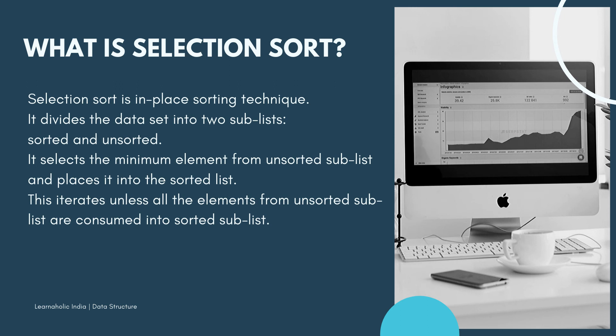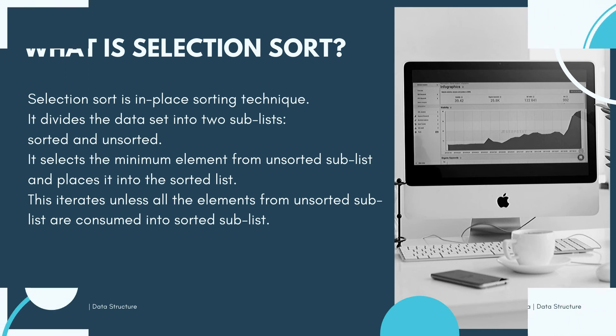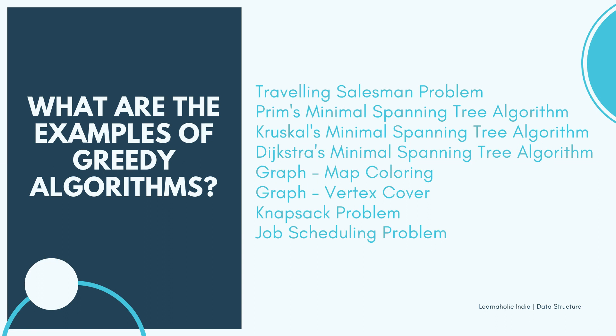The next question is: What is selection sort? Selection sort is an in-place sorting technique. It divides the data set into two sublists — sorted and unsorted. It selects the minimum element from the unsorted sublist and places it into the sorted list. This iterates until all elements from the unsorted sublist are consumed into the sorted sublist.